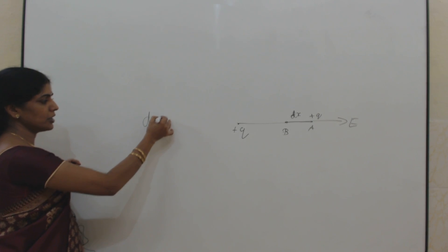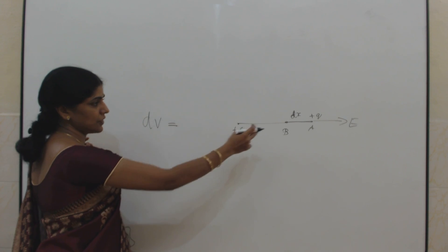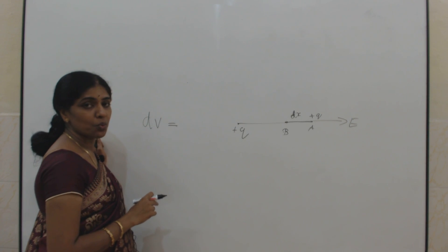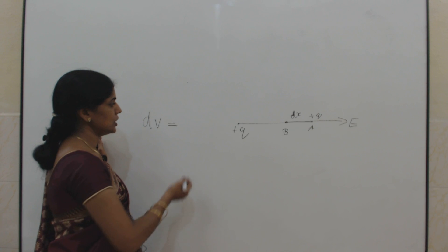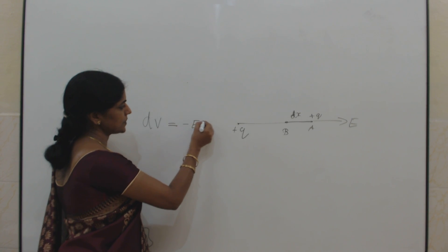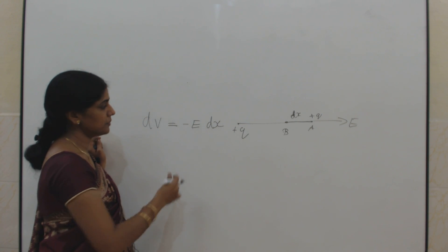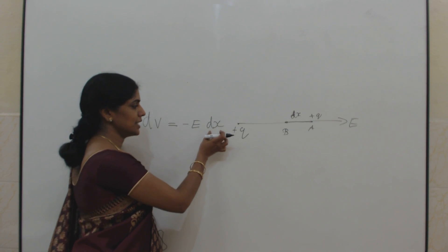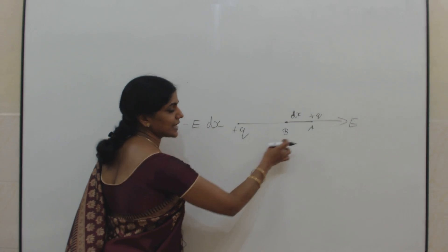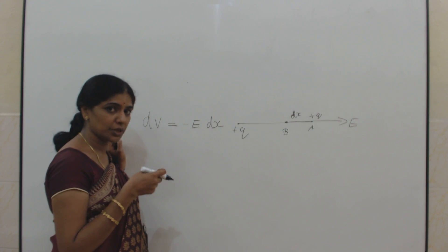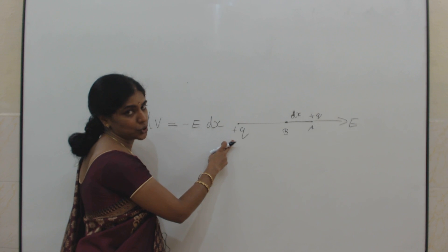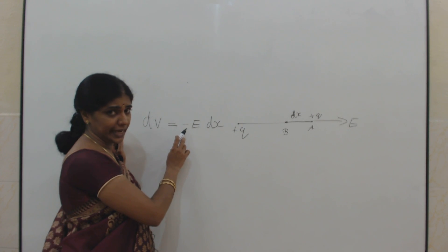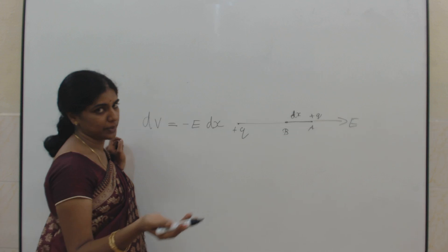So, work done in moving a unit positive charge from A to B will be stored as potential difference. Let dV be the potential difference. So dV is equal to work done — the potential difference is work done per unit positive charge. Here, E is the electric field intensity, and dx is the distance between the two points A and B. This is the distance I am going to move the point charge against the force of repulsion because two like charges are there.